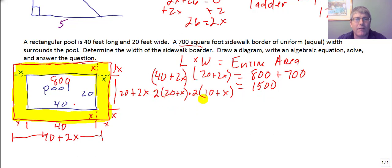If I factor two 2's out, that's factoring out a 4. I'm going to divide that out. Divide both sides by 4. 1500 is divisible by 4. So I'm left with 20 plus x times 10 plus x equals 1500 divided by 4 is 375.